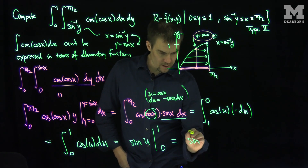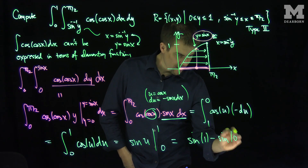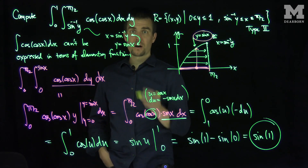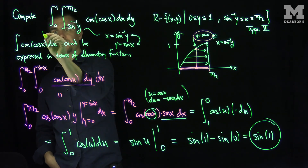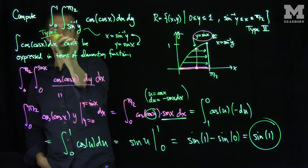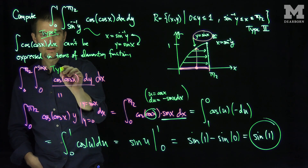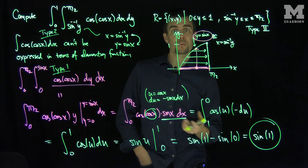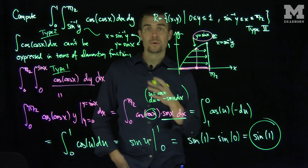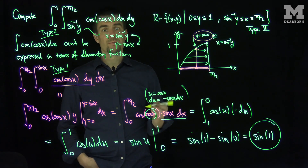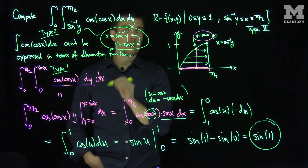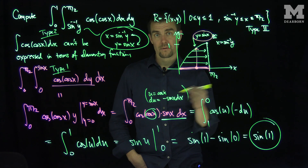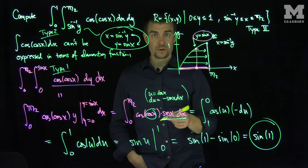Now I just have an antiderivative of cosine. The antiderivative of cosine is sine, so this is sine of u evaluated from 0 to 1, giving sine of 1 minus sine of 0. Since sine of 0 is 0, the answer is just sine of 1. By converting our integrand from type 2 to type 1, we were able to actually compute the integral — a very useful technique. When changing from type 1 to type 2 or vice versa, it always involves an inverse calculation of the limits of integration, so keep inverse functions in mind. Thank you very much.